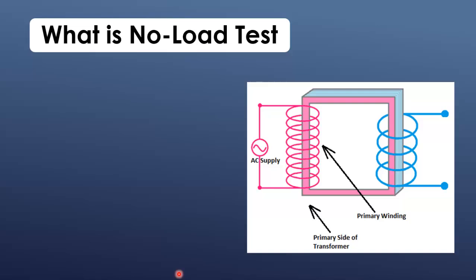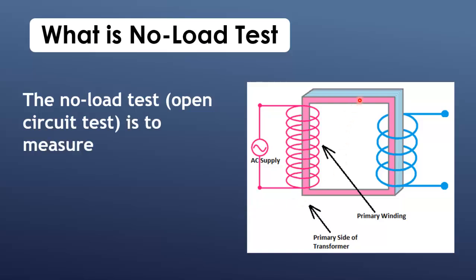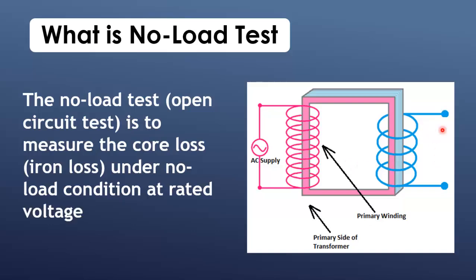The no-load test, or open-circuit test, is to measure the core loss, or iron loss, and other characteristics of the transformer under no-load conditions at rated voltage.